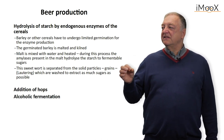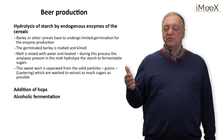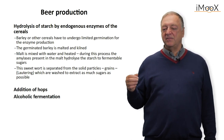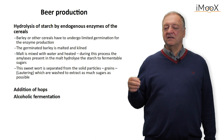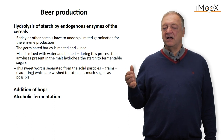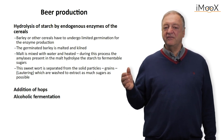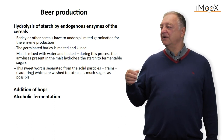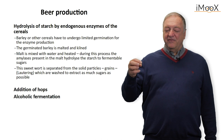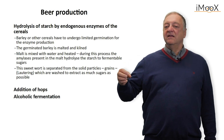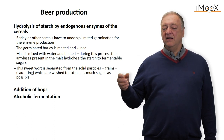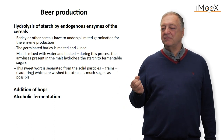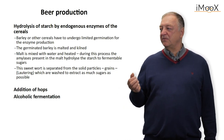After hydrolysis, the sweetwort — now sweet and containing mainly maltose — is separated from solid particles including spent grain. This process is called lautering, and the filter cake is extracted once or twice with hot water to remove as much sugar as possible.